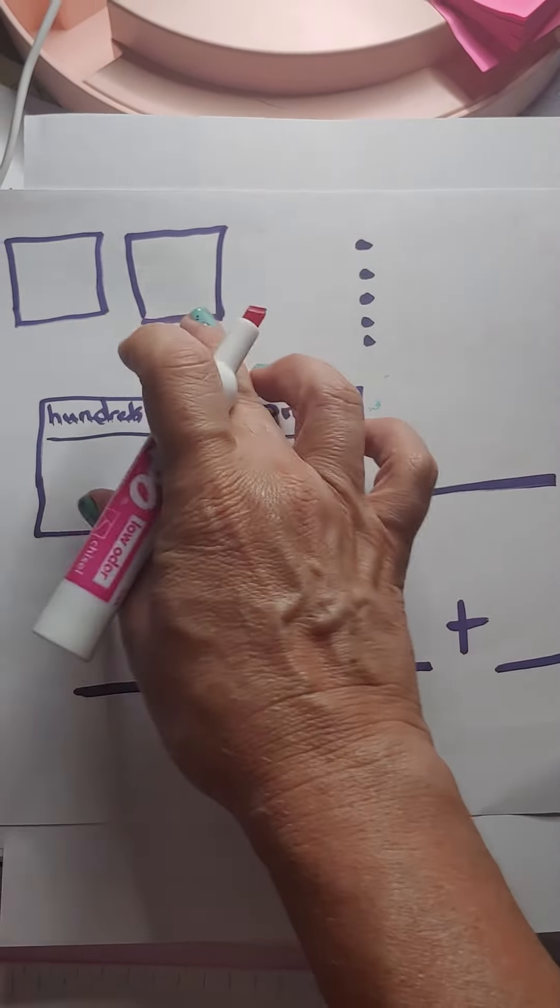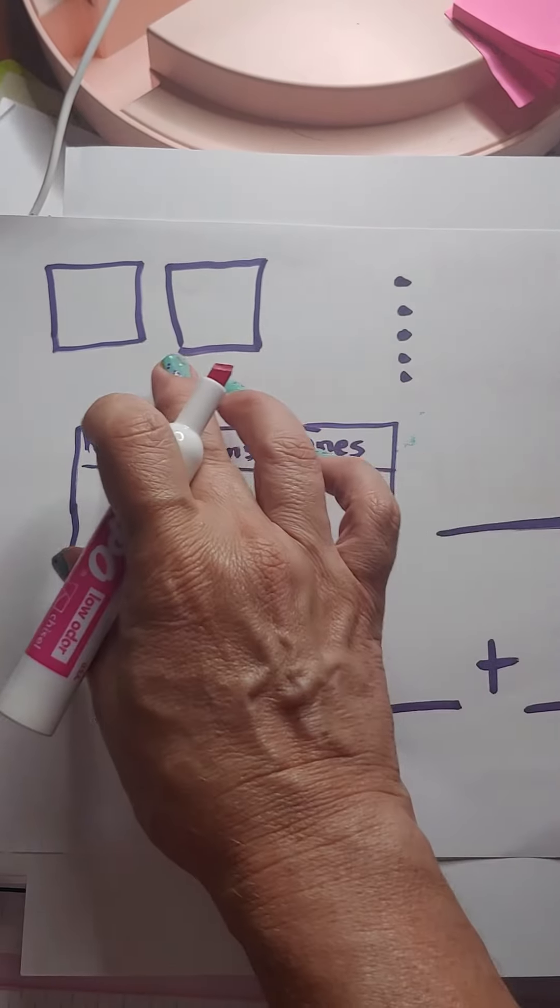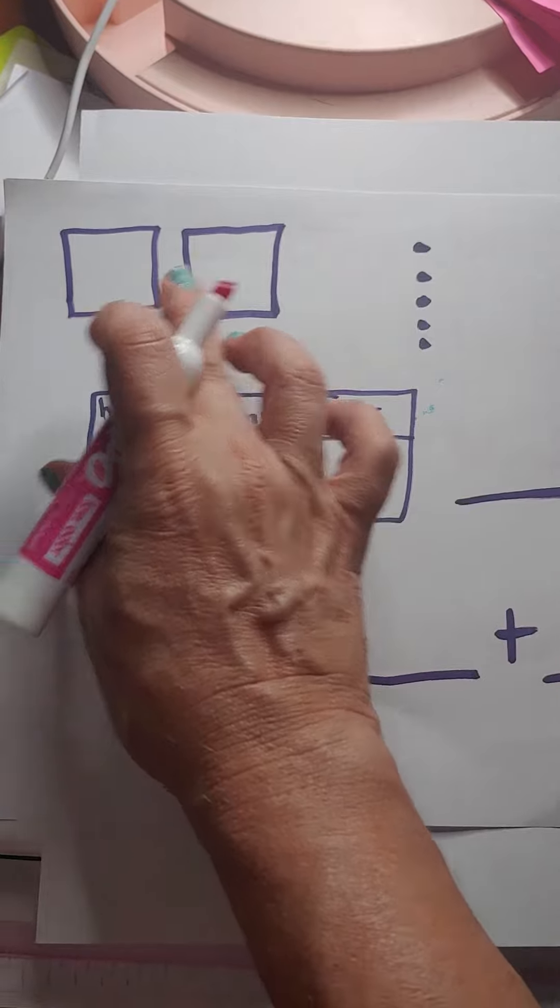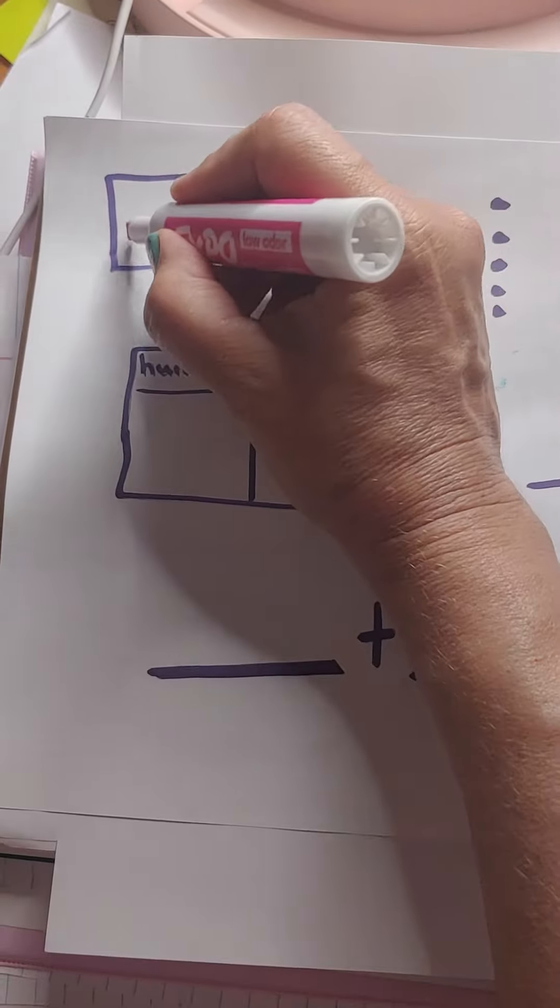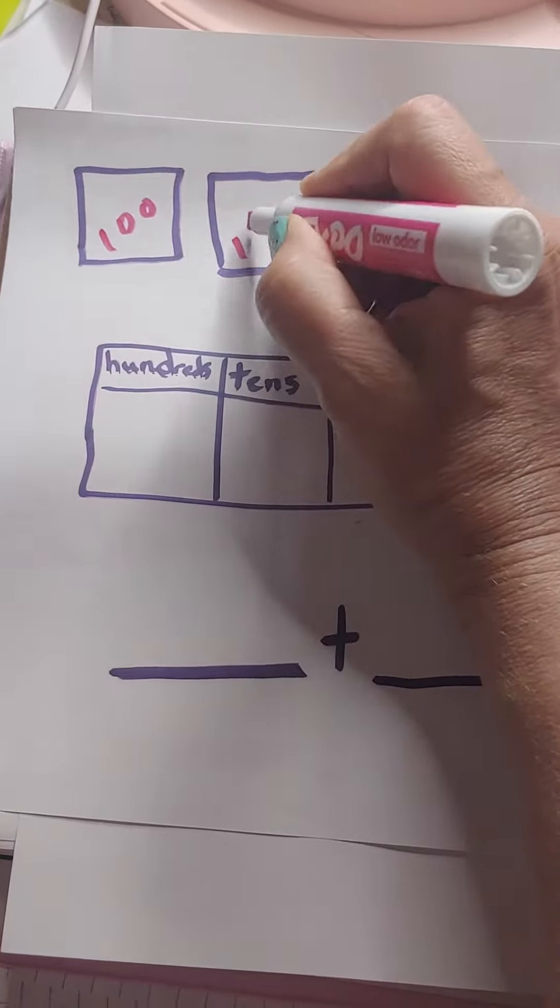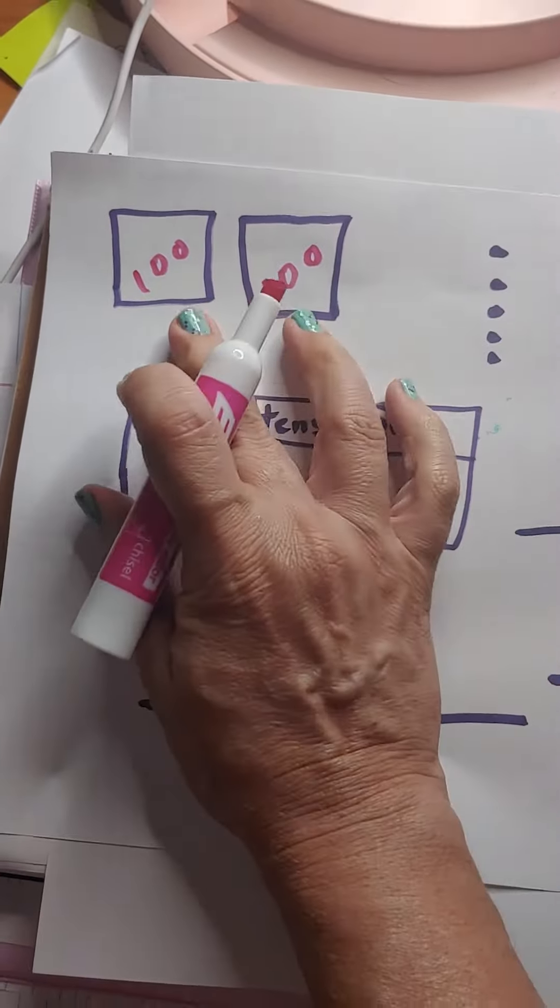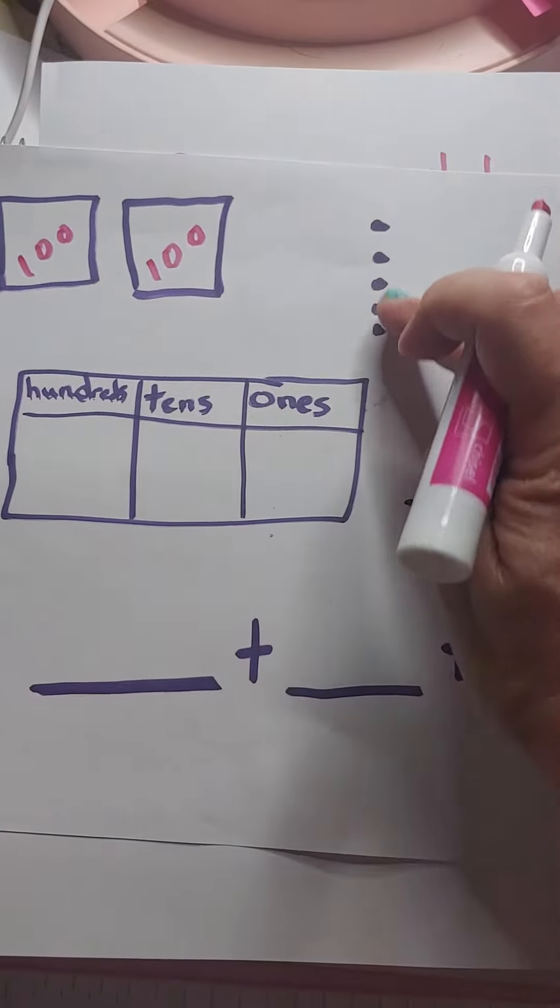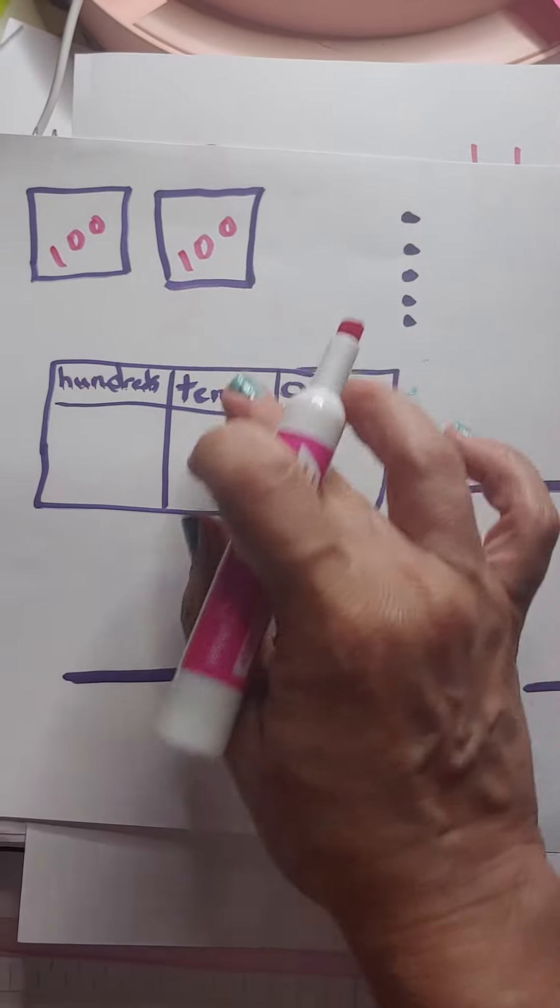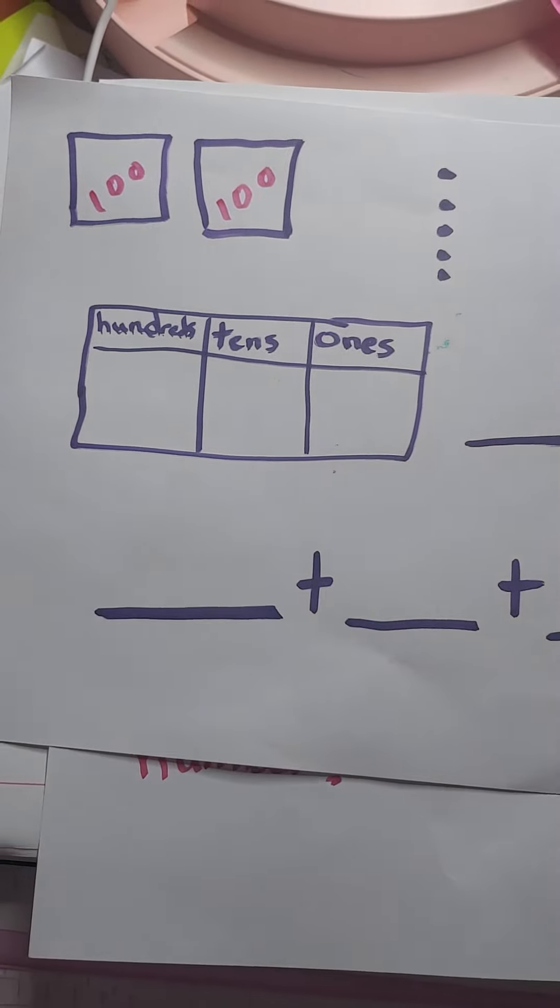Here is a model of a number. Let's see. These are hundreds. Remember, a square is a model for one hundred. And then these are ones. Let's go ahead and fill in our chart here.